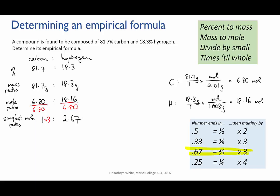In this case we need to multiply through by 3. And when you do that you find that the ratio is 3 to 8. So the empirical formula of our compound is C3H8.